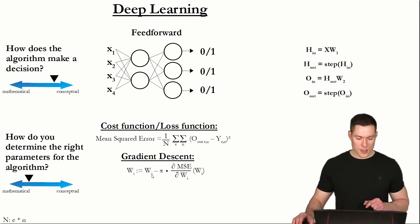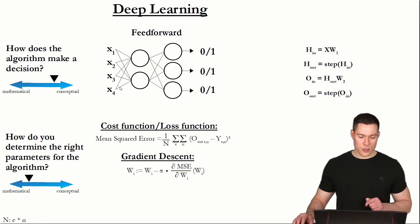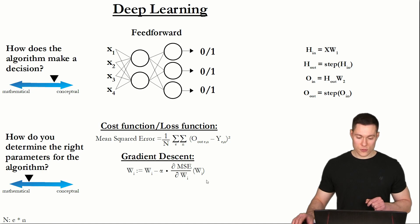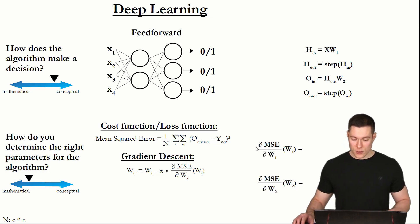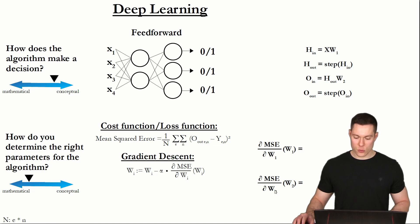If we do that for all of our weight matrices simultaneously and then perform many gradient descent steps, we can find an approximation for the minimum of this function. In our case, we have two weight matrices, so we have to determine two partial derivatives: the partial derivative of the mean squared error with respect to weight matrix 1, and with respect to weight matrix 2.